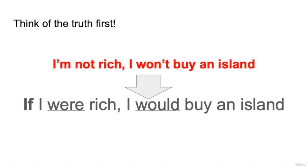This can be a bit confusing, so what I like to do is think of the truth first. For example: if I were rich, I would buy an island — this is our hypothetical sentence. The truth is that I'm not rich, and I won't buy an island. When forming conditional sentences, think of the truth first, and then make your conditional sentence.